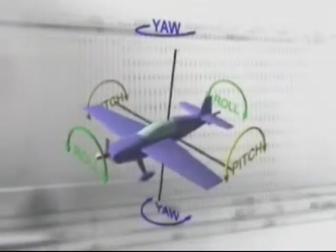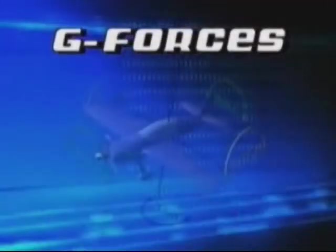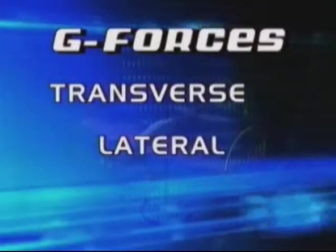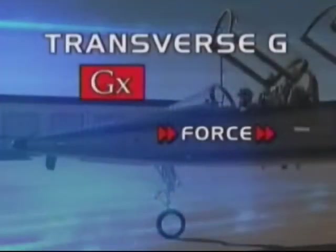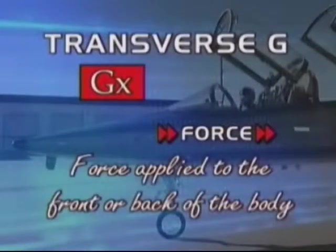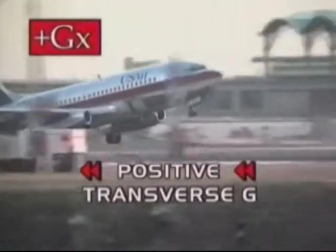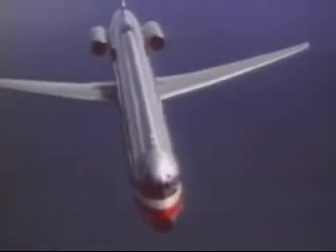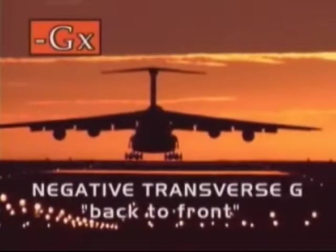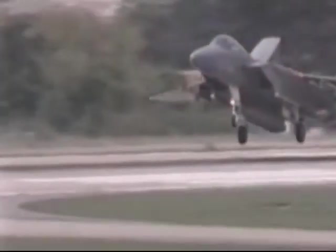The position of the body relative to the acceleration applied allows us to classify G-forces into three types: transverse, lateral, and vertical. A transverse G-force, also known as Gx, is the force applied to the front or back of the body. A positive transverse G — front to back — is typically experienced during takeoff and while increasing airspeed during level flight. A negative transverse G — back to front — is experienced during landing, in-flight air braking, and while decreasing airspeed during level flight.